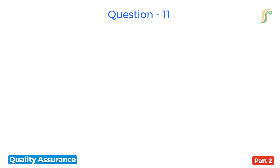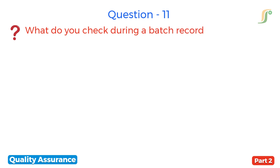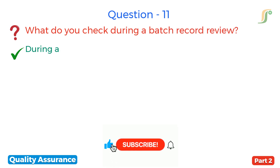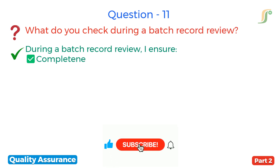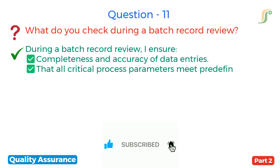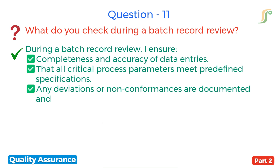The eleventh question is: what do you check during a batch record review? During a batch record review, I ensure completeness and accuracy of data entries, that all critical process parameters meet predefined specifications, and that any deviations or non-conformances are documented and resolved.